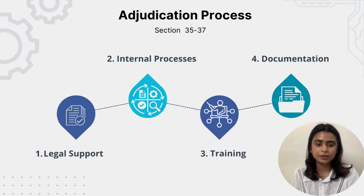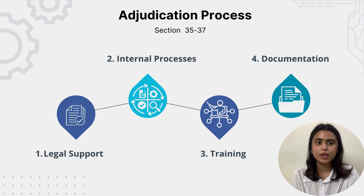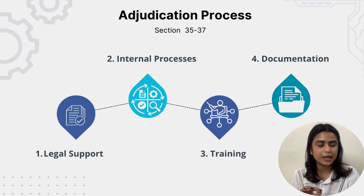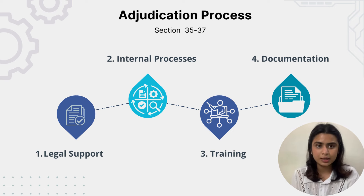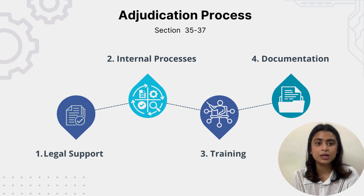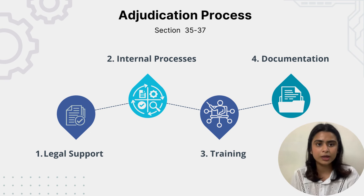Coming to Sections 35 to 37, that is the adjudication process. The first action step is to have legal support. We need to ensure the availability of legal assistance to navigate the adjudication process. For example, Infosys has a dedicated team specializing in data protection laws to assist in any adjudication processes, ensuring the organization's interests are protected. Organizations need to hire people who are well-versed in all data protection laws.